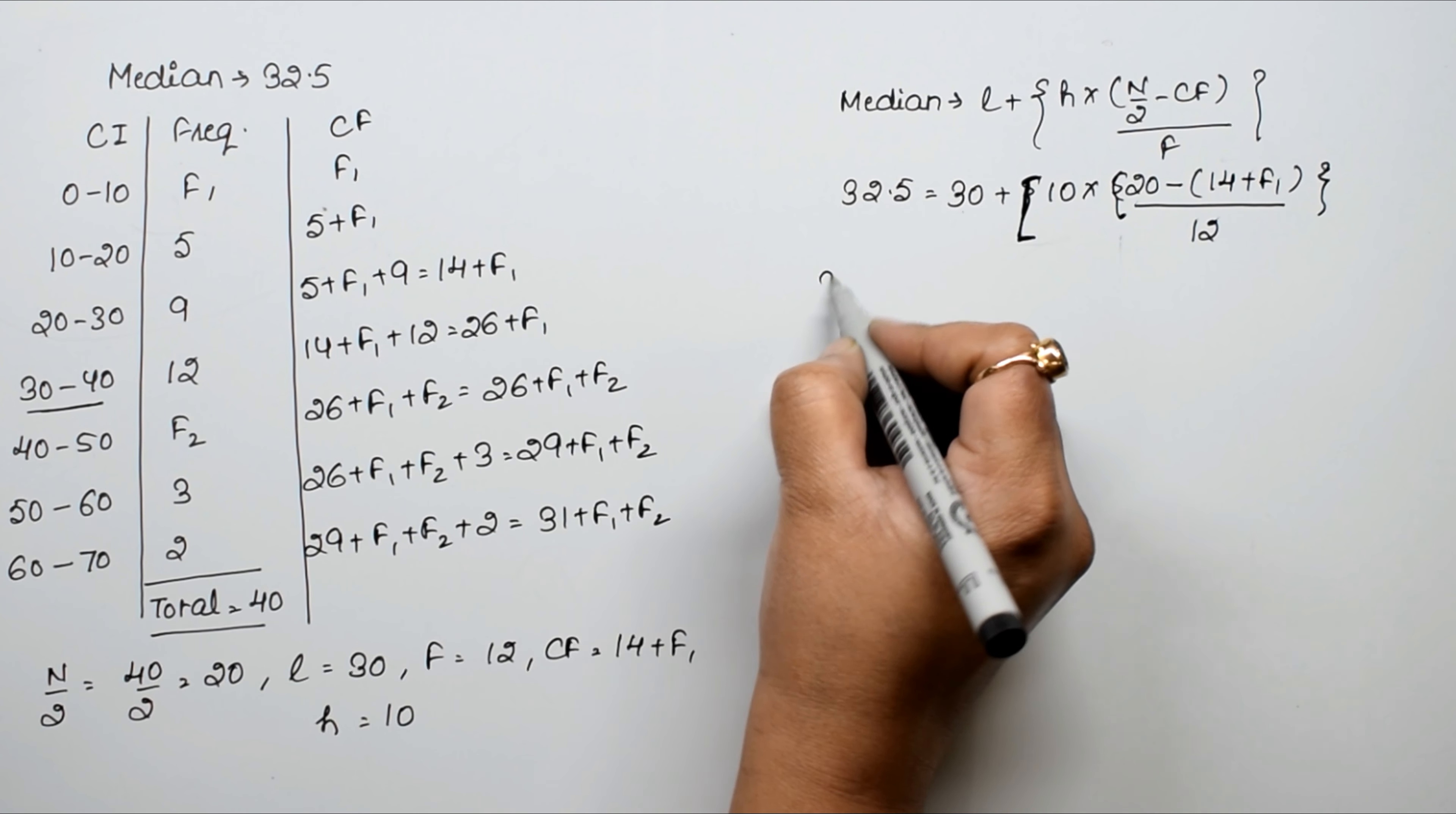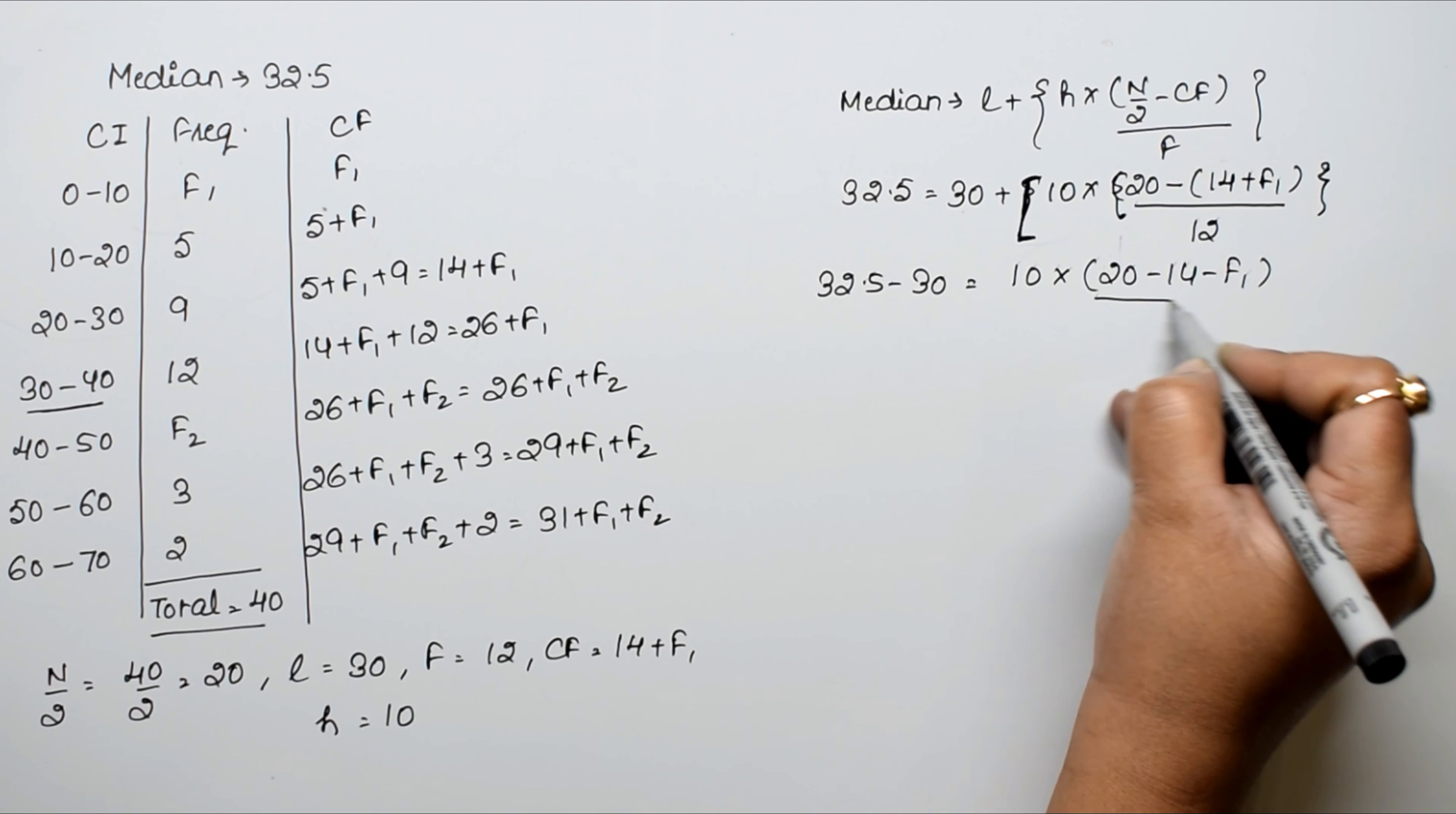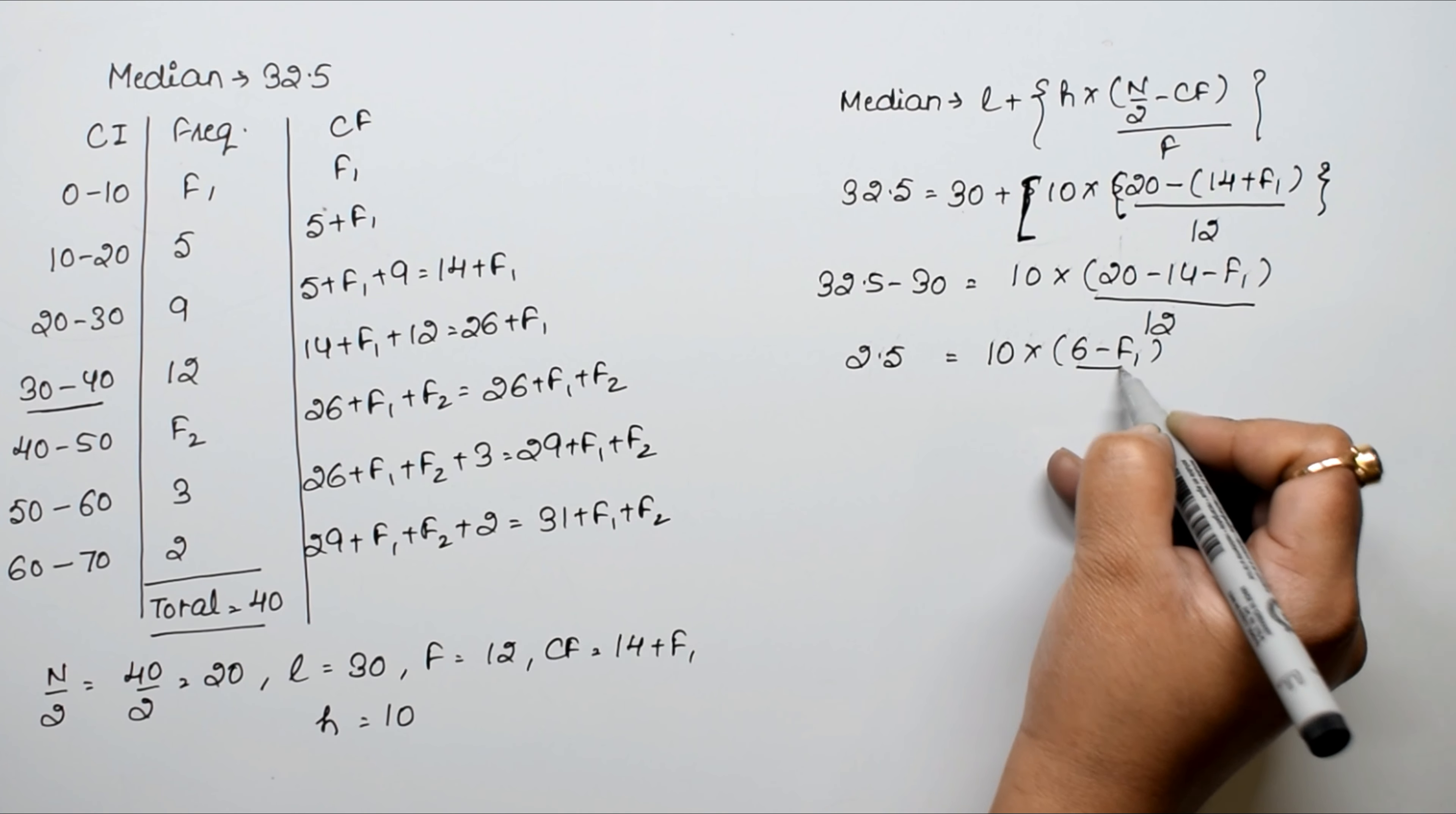So 32.5 equals 30 plus 10 into 20 minus 14 plus F1 upon 12. Therefore, 2.5 equals 10 into 6 minus F1 upon 12.